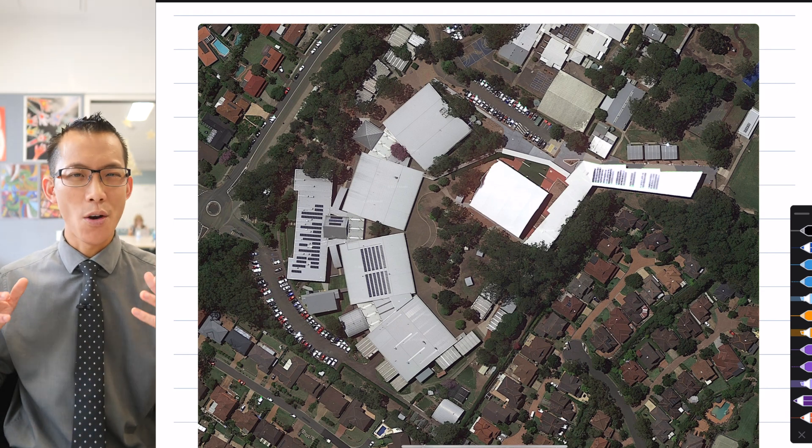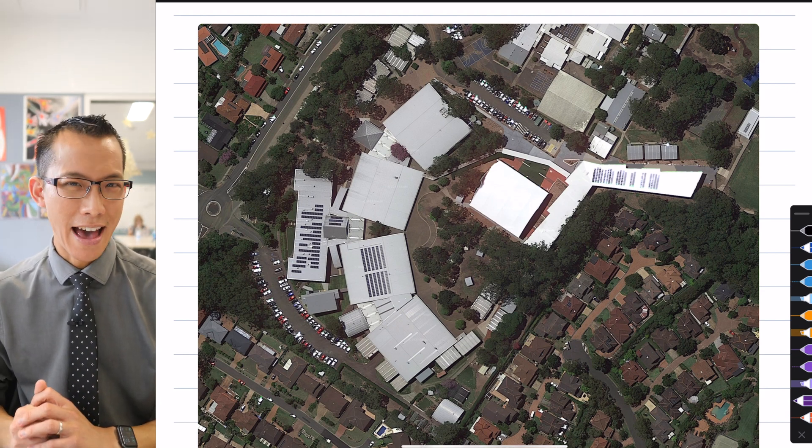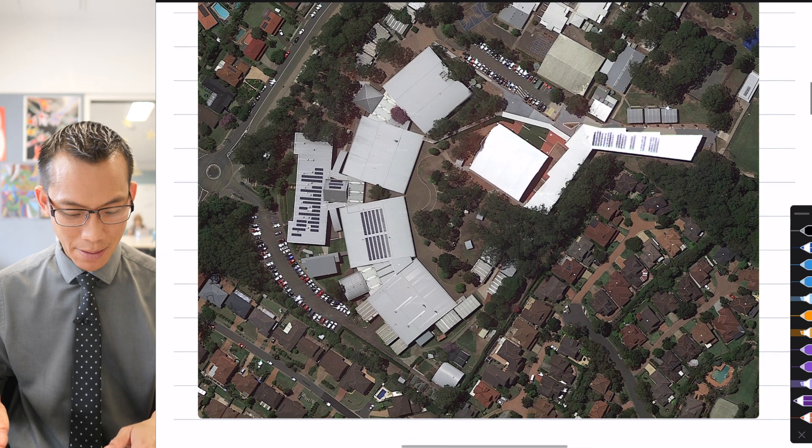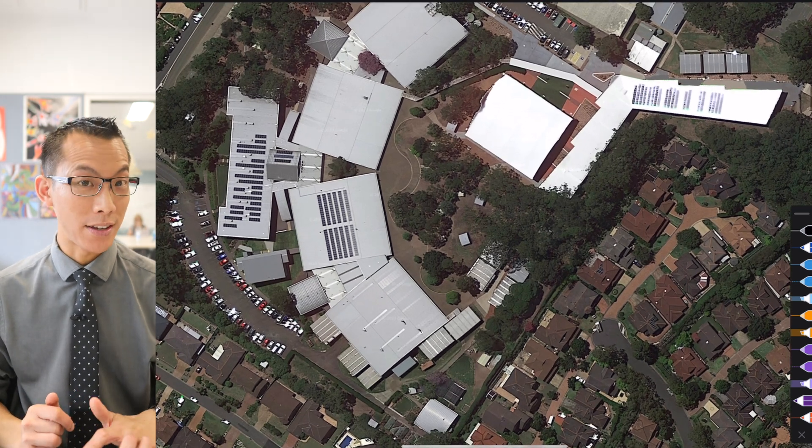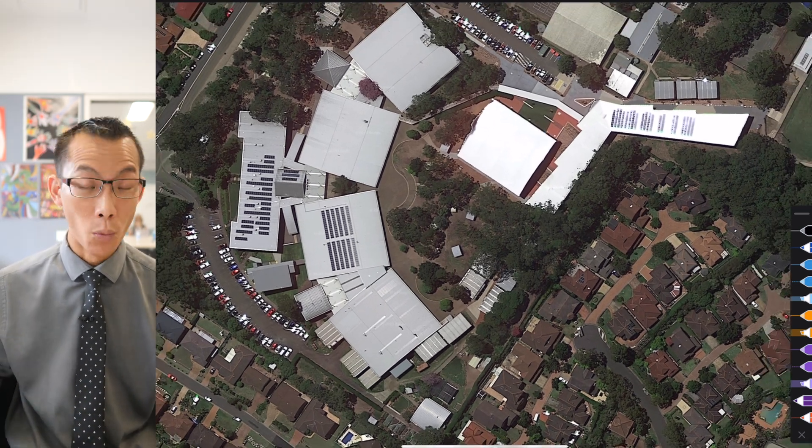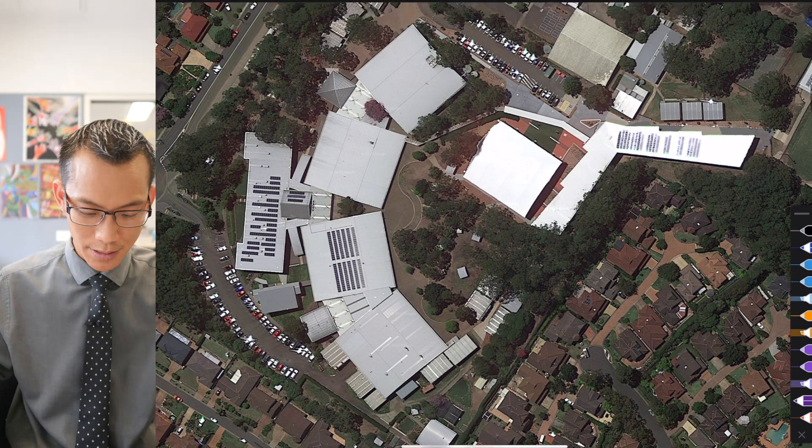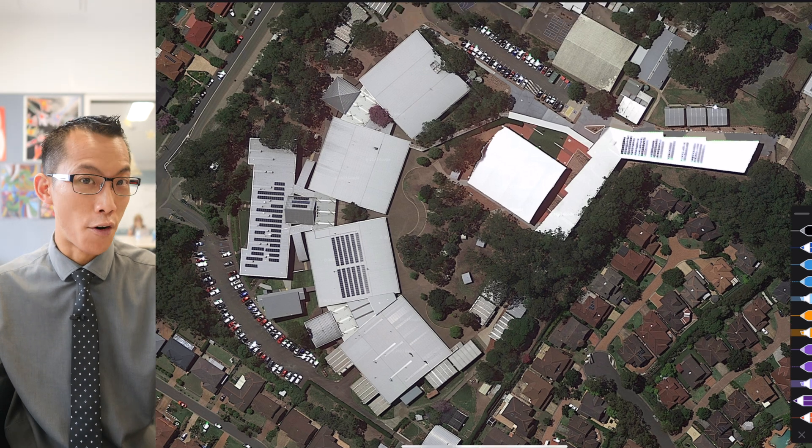Now it is important to recognize why do we care about this at all. One of the best examples that I can find of composite figures in reality is just the world that we live in. This for example is a satellite photograph of my school.